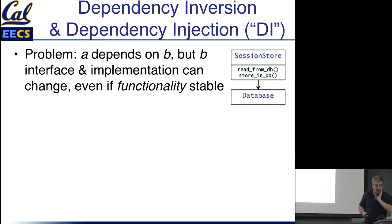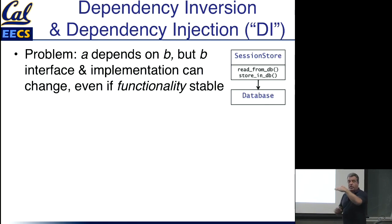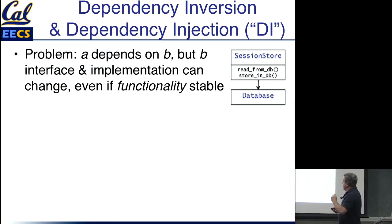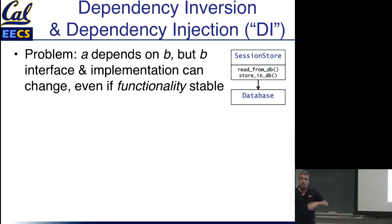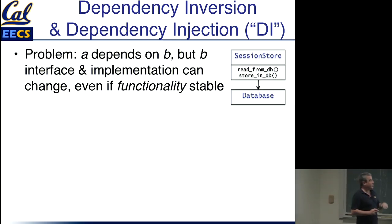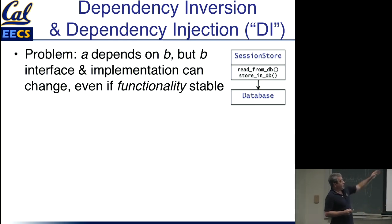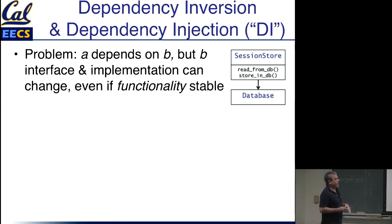The problem it's trying to solve is you have a scenario where you've got two components — one depends on the other in terms of the way that it expects to call it. Not only the implementation, but maybe even the interface of component B can change. Suppose I have something I want to use as a session store — like cookies.